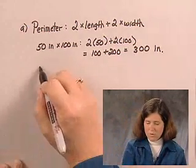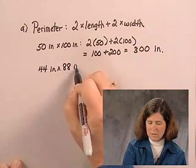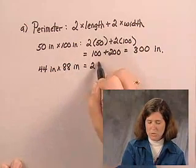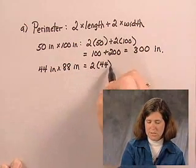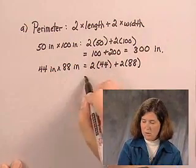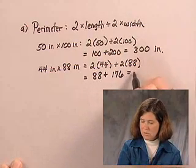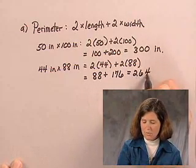For the 44 inch by 88 inch table, we have the perimeter is two times 44 inches plus two times 88 inches, which is 88 inches plus 176 inches, or 264 inches.